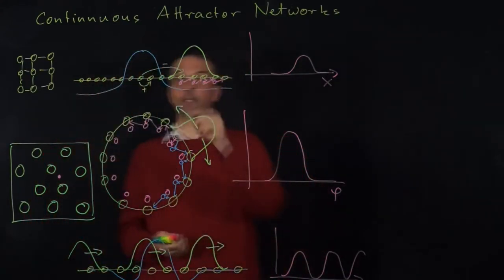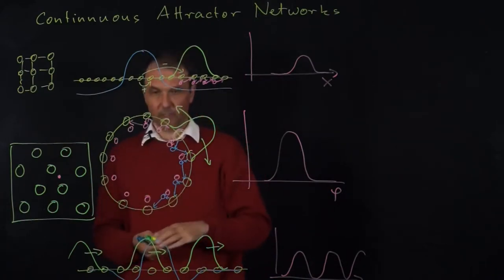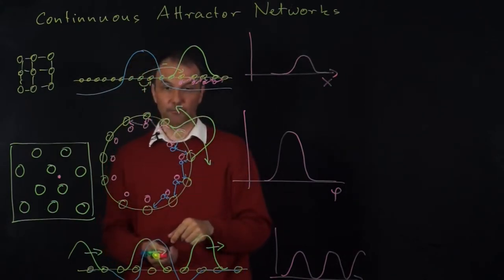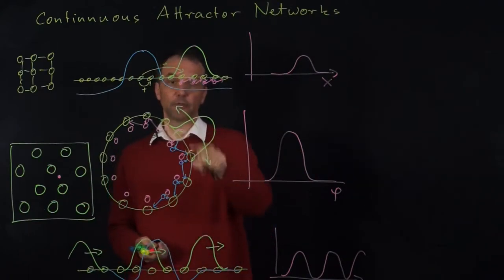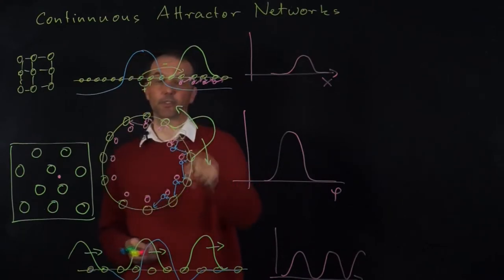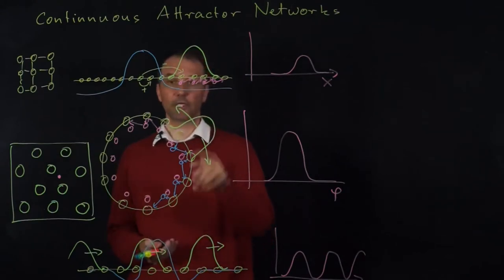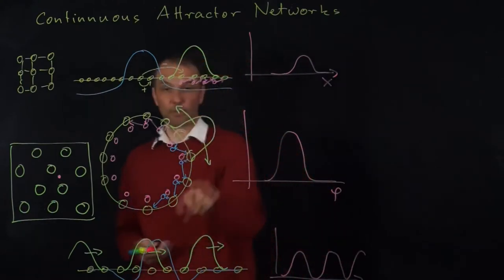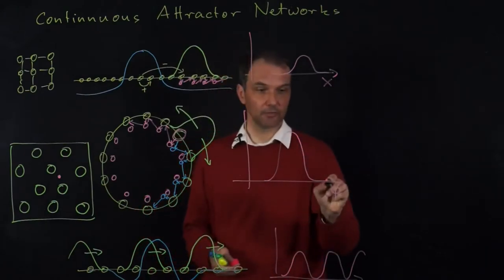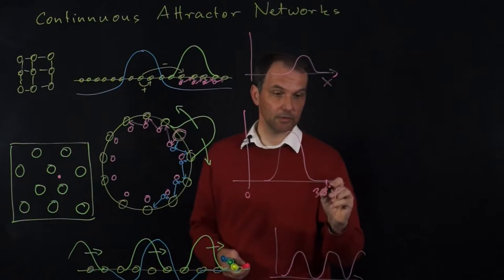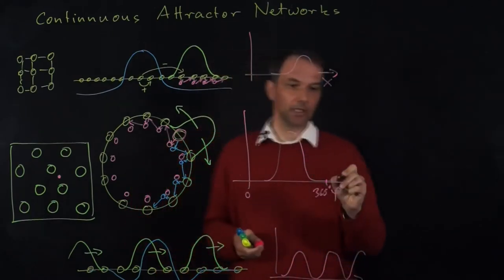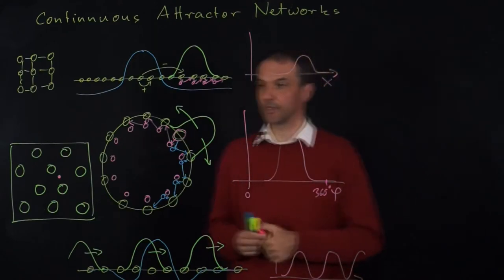Another way to deal with this is to start from the head direction model but interpret the dimension along the ring's circumference not as head direction but as location. If you move the blob on this ring as the animal moves, it will repeat itself — you get exactly the same pattern if you rotate multiple times. In the head direction case we confined rotation from 0 to 360 degrees. Here we just keep going, and it would actually repeat, giving multiple patterns — this is the 1D analog of grid cells.